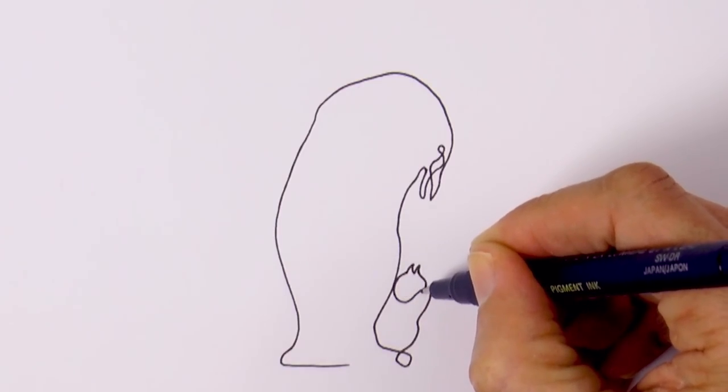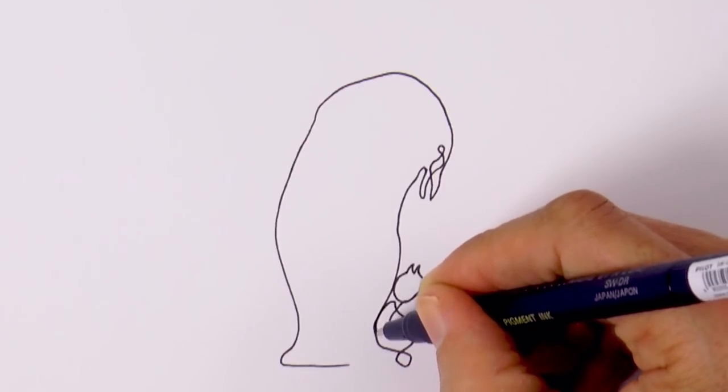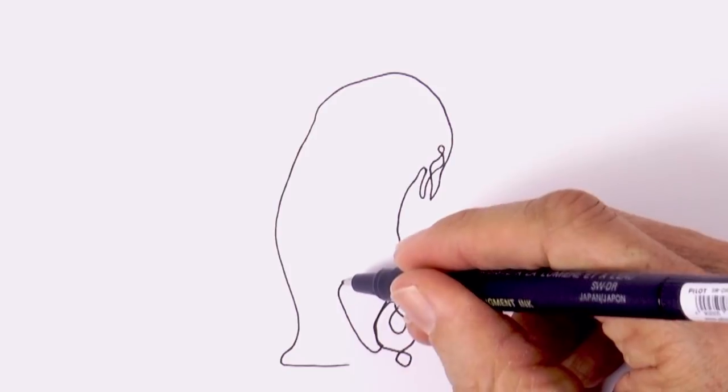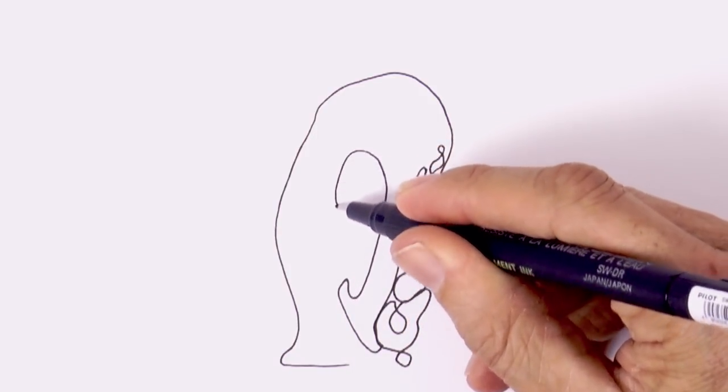The head is of a different color, so we can do it like this and the little wing. Then we separate the black from the white of the penguin and make the wing. Good!